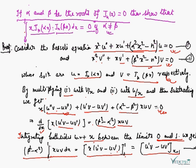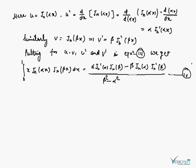After putting in the limits, we have u'v − uv' evaluated at x = 1. Here we have the solution u = J_n(αx), so the derivative of u with respect to x is d/dx [J_n(αx)] = d/d(αx) [J_n(αx)] · d(αx)/dx = α · J_n'(αx). This gives us u' at x = 1.